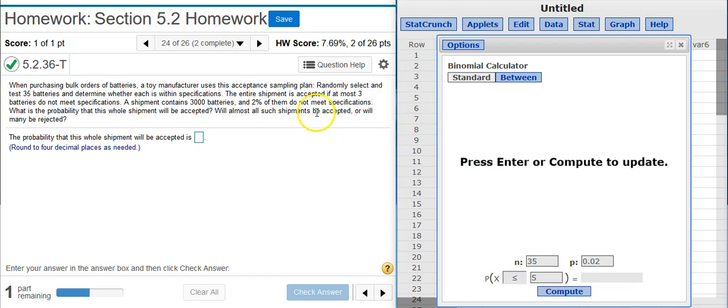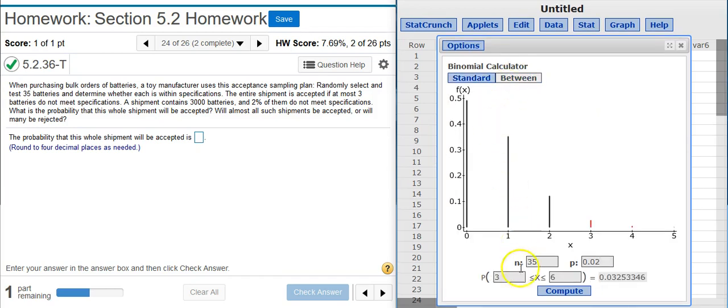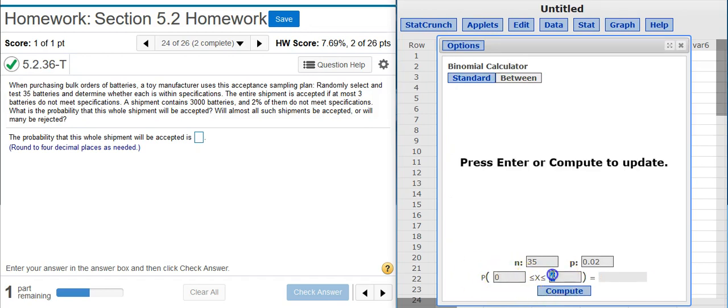Then we have to look to see that the entire shipment will be accepted if, at most, 3 batteries do not meet specifications. So, we can have no batteries or 1 battery or 2 batteries or 3 batteries. And that would mean that we are accepting the shipment. So, here we're actually calculating the probability based on one number. But we need 4 different numbers: 0, 1, 2, and 3. So, I'm going to come up here and press the between option on my calculator. So I can put in everything between 0 and 3.